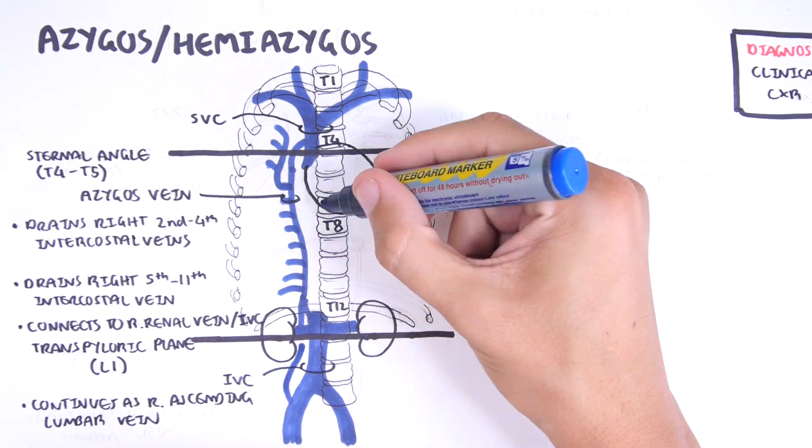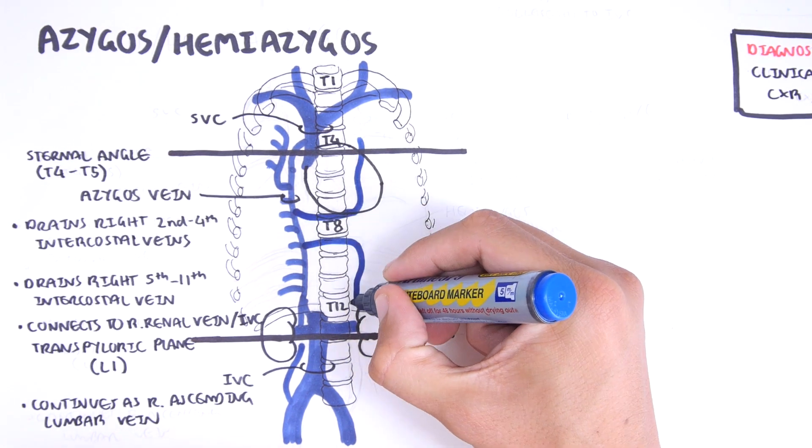The azygos hemiazygos system forms an H-shaped network in the posterior medial sternum, anterior to the body of the thoracic vertebrae. The azygos vein gives the entire right arm of the H.